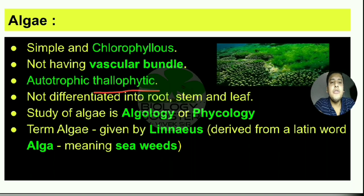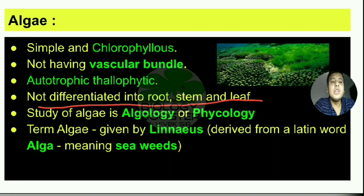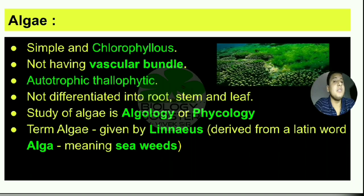The term 'thallophytic' — if you break it down, you get two terms: 'thallo' and 'phytic'. Phytic refers to plants, and thallo means thallus-like structure. Thallus-like structure means the plant is not differentiated into root, stem, or leaf. The whole plant looks alike — there is no differentiation between root, stem, or leaf. All parts of the plant look the same.